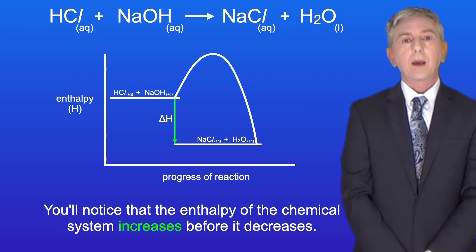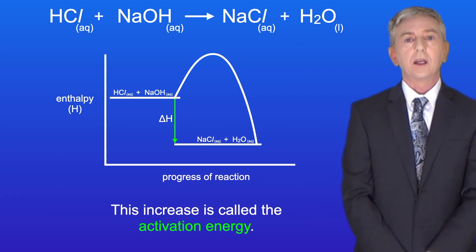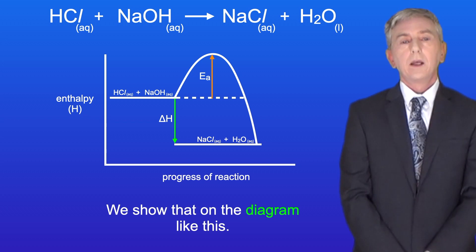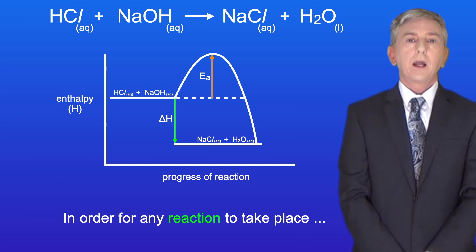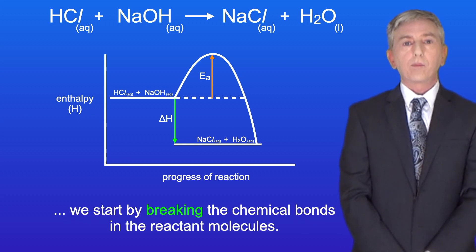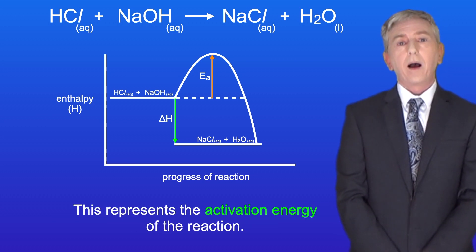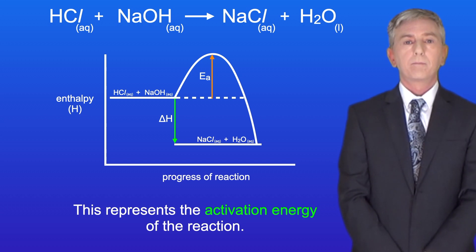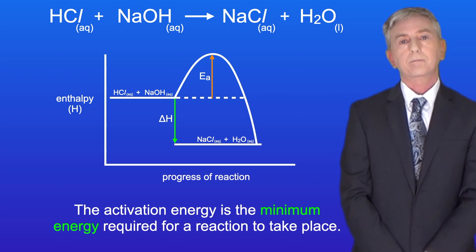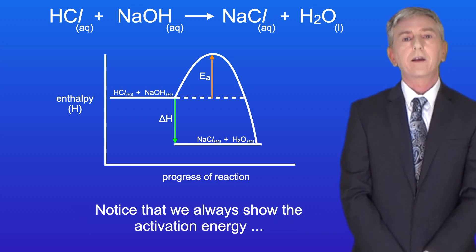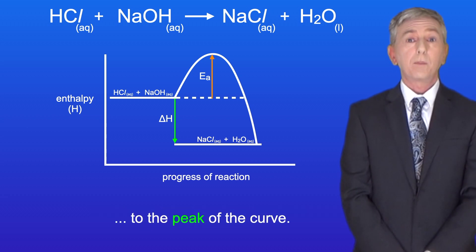You'll notice that the enthalpy of the chemical system increases before it decreases. This increase is called the activation energy and we show that on the diagram like this. Activation energy has the symbol capital E lowercase a. In order for any reaction to take place we start by breaking the chemical bonds in the reactant molecules. Breaking chemical bonds requires energy, and this represents the activation energy of the reaction — the minimum energy required for a reaction to take place. Notice that we always show the activation energy with an upward pointing arrow, and this arrow runs from the enthalpy of the reactants to the peak of the curve.